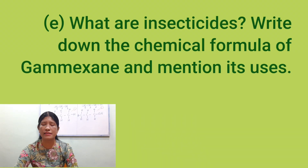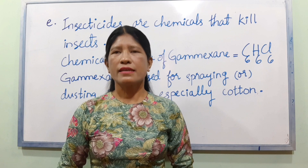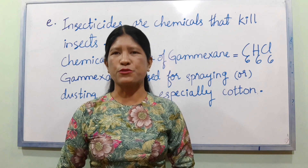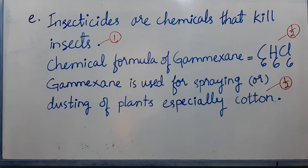Number 1: What are insecticides? Write down the chemical formula of gamaxane and mention its uses. Insecticides are chemicals that kill insects. Gamaxane is used for spraying or dusting of plants, especially cotton.